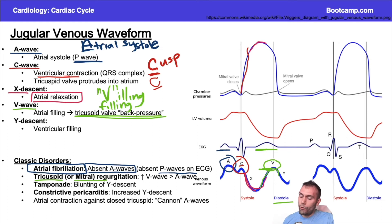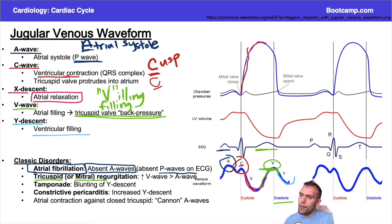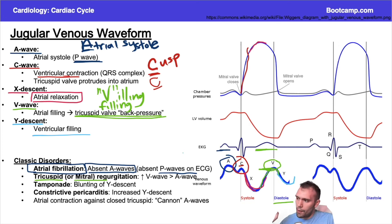The same principle applies on the left side: mitral regurgitation would cause an elevated V wave on the left atrial waveform. Finally, the Y descent is associated with blood moving from the right atrium into the right ventricle — pressure decreases as the atrium empties, and then we start all over again with atrial systole ejecting that last blood via the P wave.